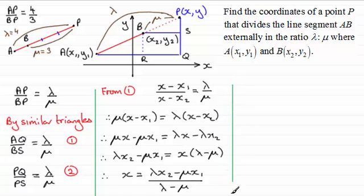Okay, so that's the x coordinate of the point P. Now we need to get the y coordinate and we turn to the second equation 2. So from equation 2, we compare PQ with PS. So PQ, first of all, this side here, the length is going to be y minus y1. So we've got y minus y1. And that's divided then by the length PS. And PS is going to be y minus y2. So we've got y minus y2. And again, this ratio is going to be lambda divided by mu.